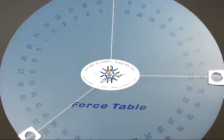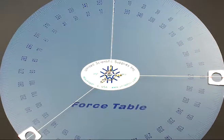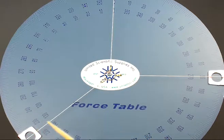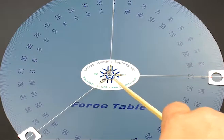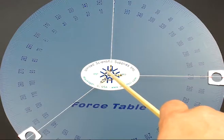Here is an example of a setup. I have two known vectors at two known angles. Then you ask the students to vary the angle and vary the weight of a third vector to get the central ring to be as centered as possible on the center post.